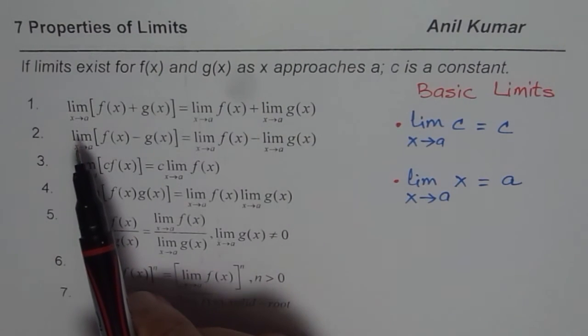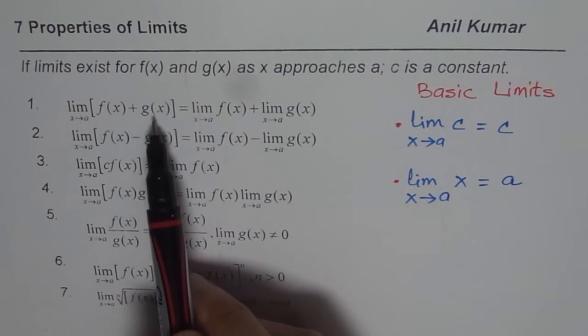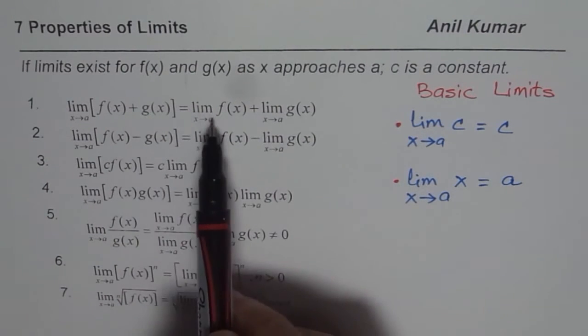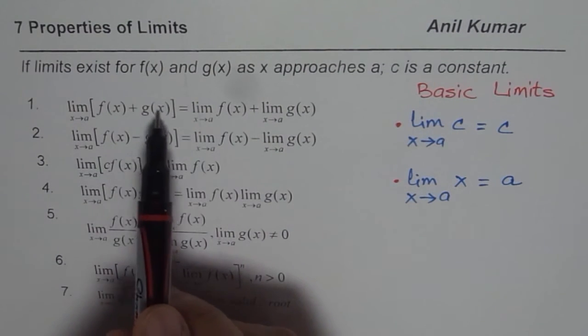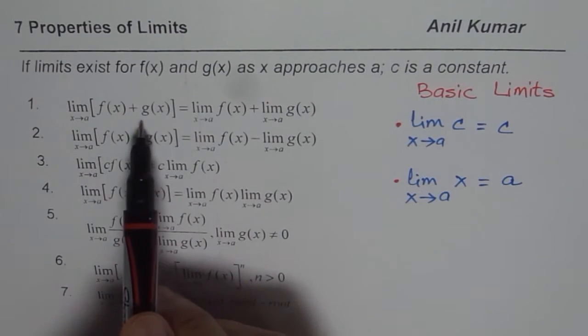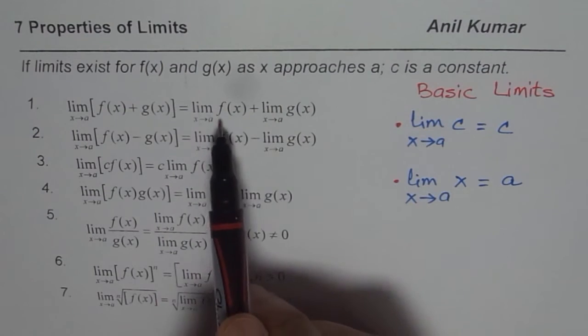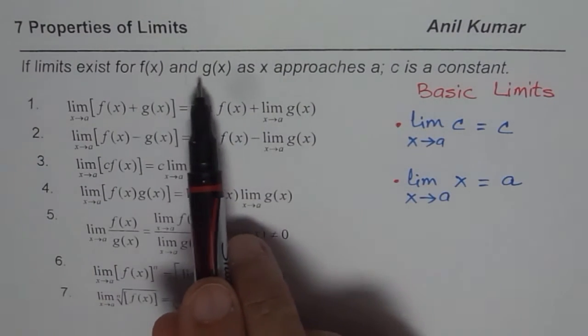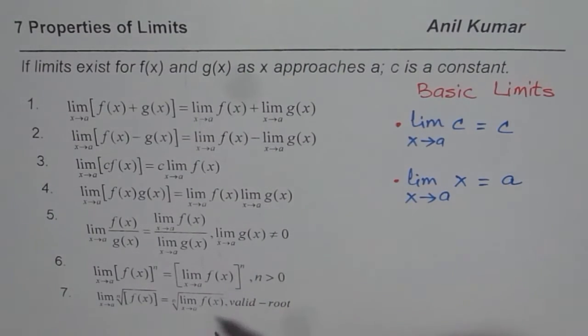In the first property, the limit of the sum of the functions equals the sum of the limit of functions. If I have functions f(x) and g(x), then the limit of this combination is the individual sum of their limits. And of course, the limit of each should exist. With that in mind, we can now go through this list of seven properties quickly.